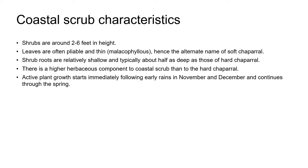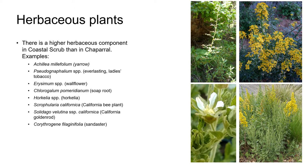Active plant growth usually starts immediately following the early rains in November and December and continues through spring. Coastal Scrub has a higher herbaceous component than Chaparral, and common herbaceous plants in Santa Cruz County include Yarrow (Achillea millefolium), Everlasting or Lady's Tobacco, Wallflowers, Soaproot, Horkelia, and California Bee Plant.